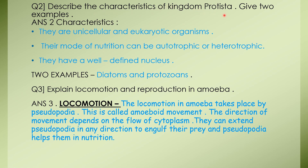Describe the characteristics of Kingdom Protista and give two examples. They are unicellular and eukaryotic organisms. Their mode of nutrition can be autotrophic - producing their own food - or heterotrophic. They have a well-defined nucleus. Two examples of Kingdom Protista are diatoms and protozoans.